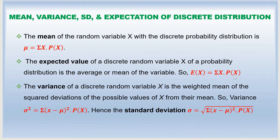The mean is sometimes called the expected value, which is why the formula for the mean and the expected value is the same. The expected value of the discrete random variable x is the average, or the mean — they are exactly the same thing. The variance is the square of the standard deviation, so once we find the variance, taking the square root gives us the standard deviation.